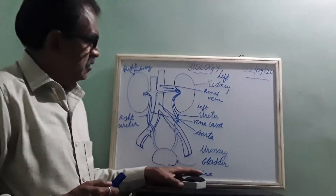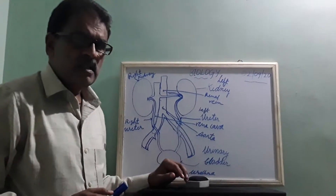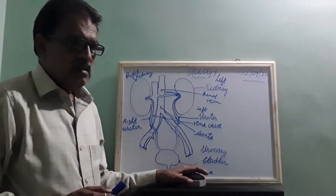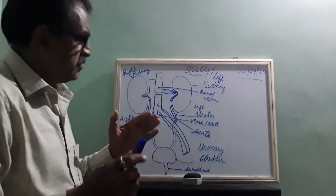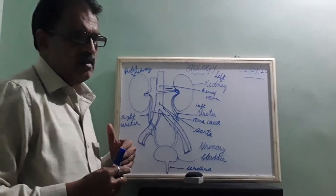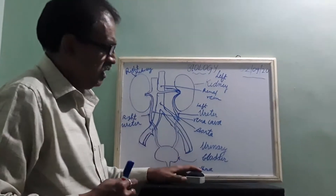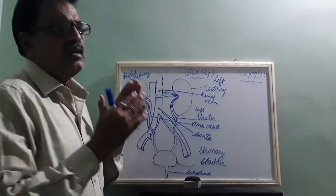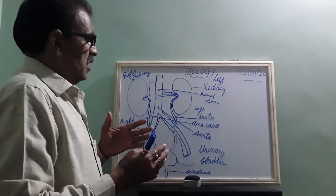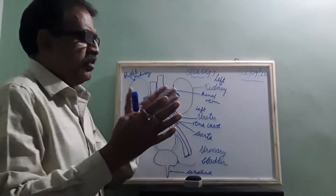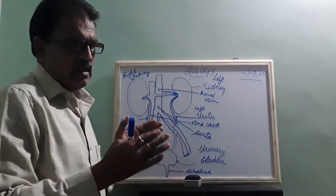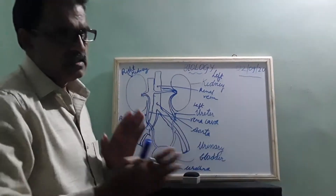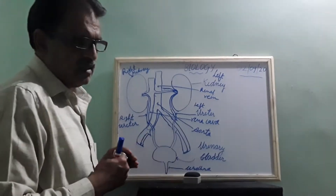Good morning children. Today we will study about excretion in human beings. It is a process which is very important for life. There is removal of liquid waste and purification — for example, the heart has a related organ called lungs, and lungs help in purification of blood.